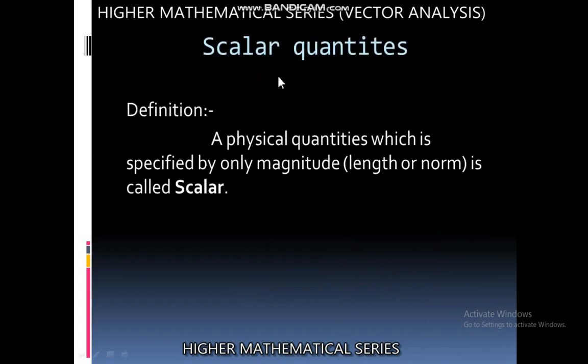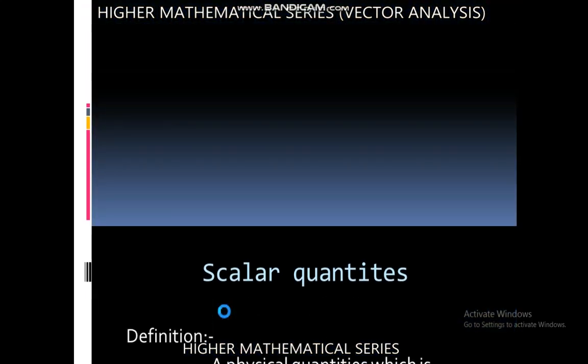Here is the definition of scalar quantities. Scalar quantities are those quantities which are specified by magnitude, length or norm. Here is the example of scalar quantities: speed is a scalar quantity measured in meter per second, distance is a scalar quantity measured in length, work done is also a scalar quantity.